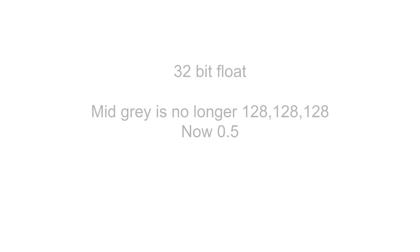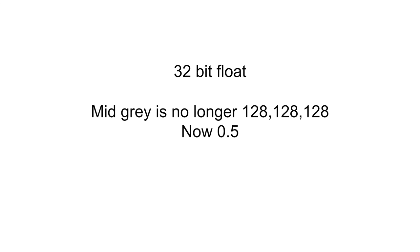So you might have heard of 32-bit float - what does that mean? Well 32-bit float basically means we can store values over one, which is like a high dynamic range. The float means we no longer store it as three integers. For example, mid-grey in 8-bit would be 128, 128, 128, but in a 32-bit float it would be 0.5 - it's a decimal point, not an integer anymore. The float in the name means that decimal can float up and down, so you can have numbers higher than 1.